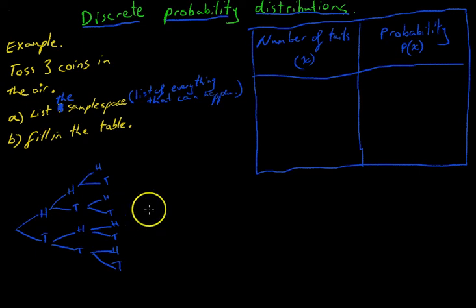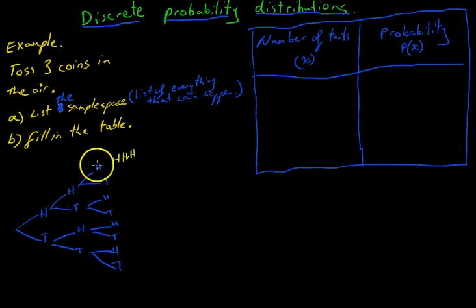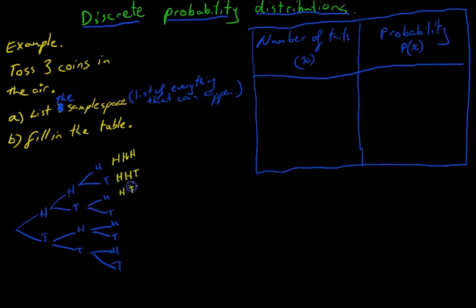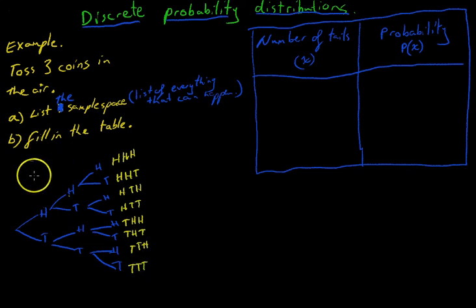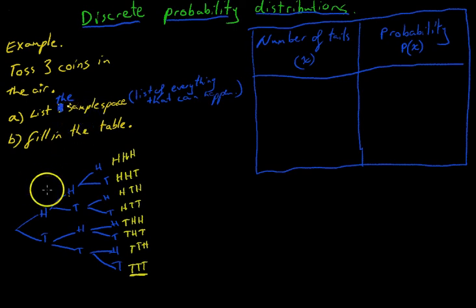From that tree diagram we can write up our sample space. One thing that could happen is heads, heads, heads — the first, second, and third coins are all heads. The second thing that could happen is heads, heads, tails. And we can continue on just by reading across our tree diagram. So there's our first piece — we've listed the sample space, which is a list of everything that can happen.